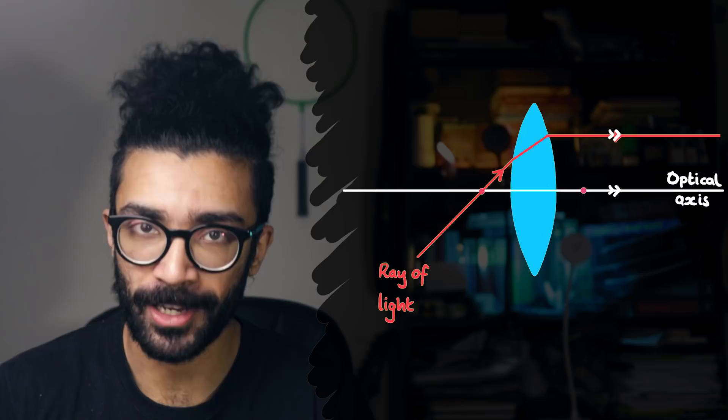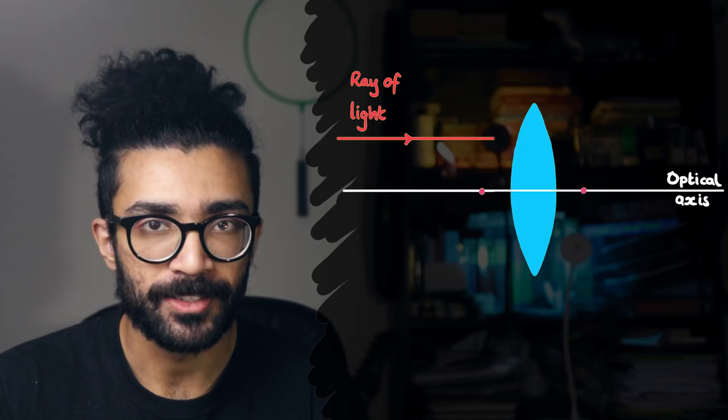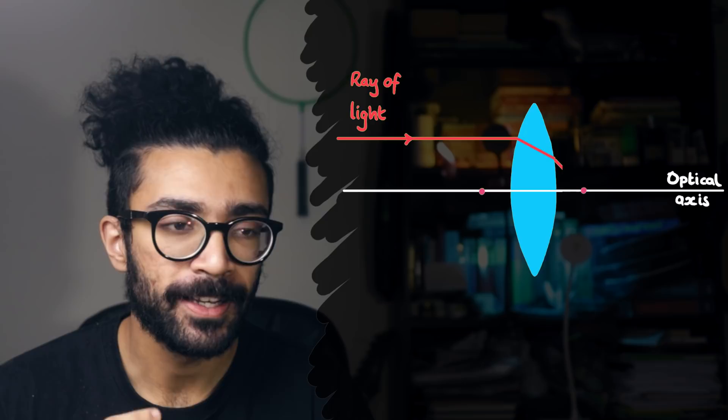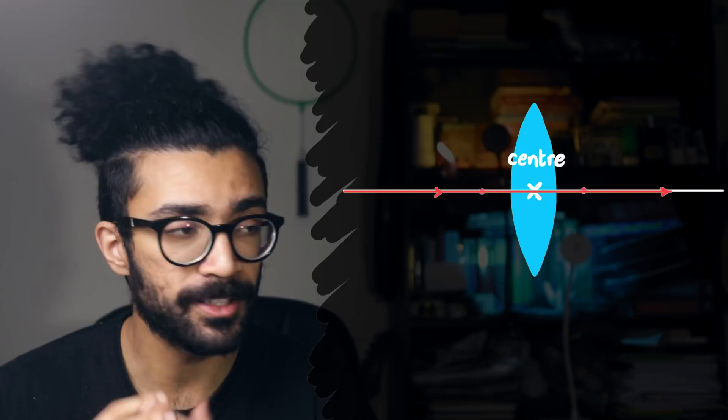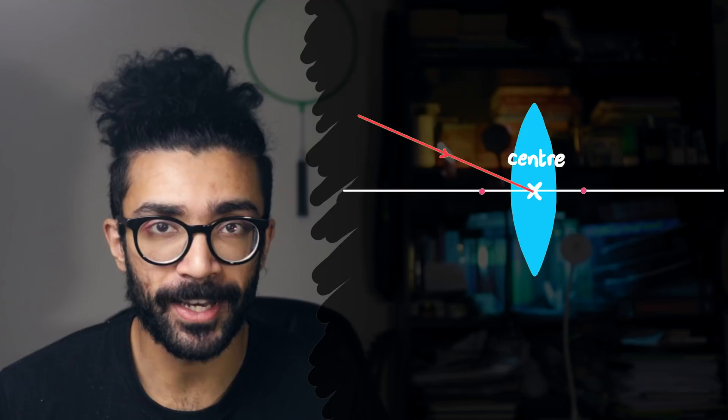Similarly, any ray of light entering the lens already moving parallel to the optical axis will be refracted by the lens in such a way that it passes through the focal point on the other side. Next, we can consider any ray of light passing through the absolute center of the lens, whether it's moving along the optical axis or in any other direction. We will assume that any ray of light passing through the absolute center of the lens will continue on in the same direction.